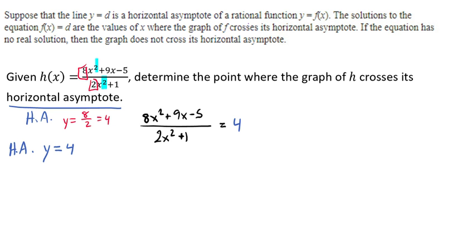So we're going to multiply both sides by 2x squared plus 1 to get that gone. And so now we have 8x squared plus 9x minus 5 equals, and we'll distribute that 4, 8x squared plus 4.